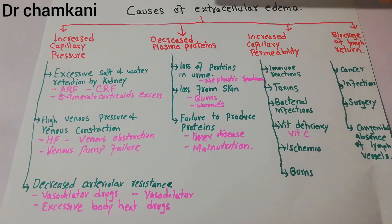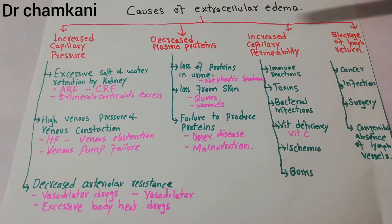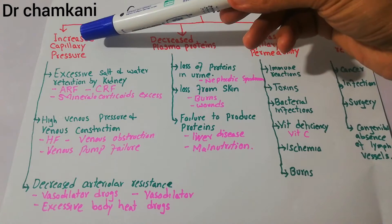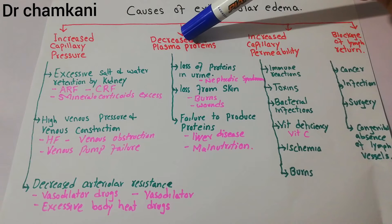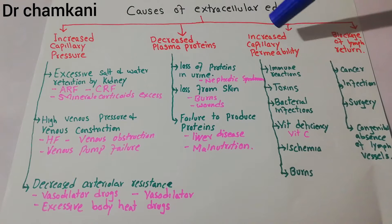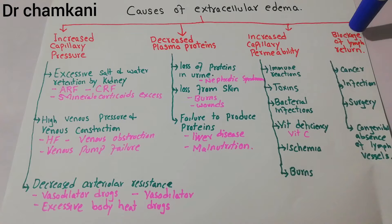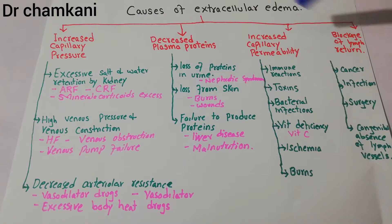Today we will talk about causes of extracellular edema. The important causes have been broadly classified into four main groups: causes due to increased capillary pressure, causes due to decreased plasma proteins, causes due to increased capillary permeability, and causes due to blockage of lymph return.